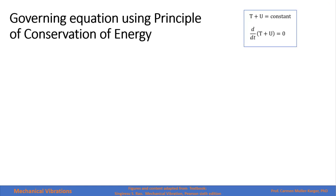For undamped systems, we can also use the principle of conservation of energy to calculate the governing equations. In systems without any dissipation, the kinetic energy plus the potential energy remains constant. Therefore, if we differentiate this expression with respect to time, it becomes equal to zero.